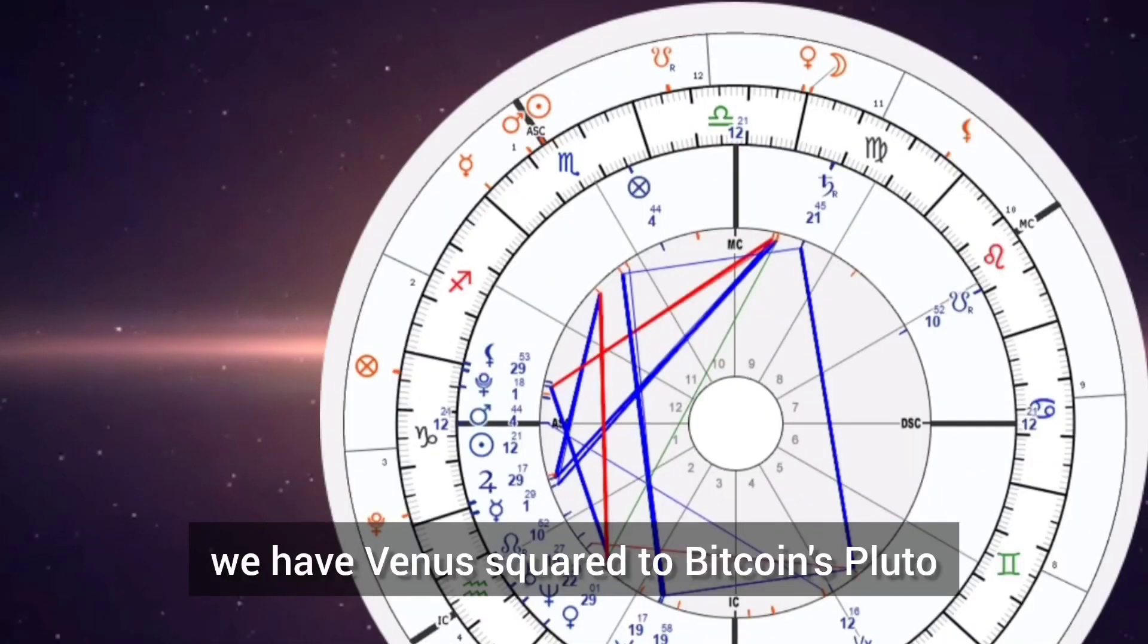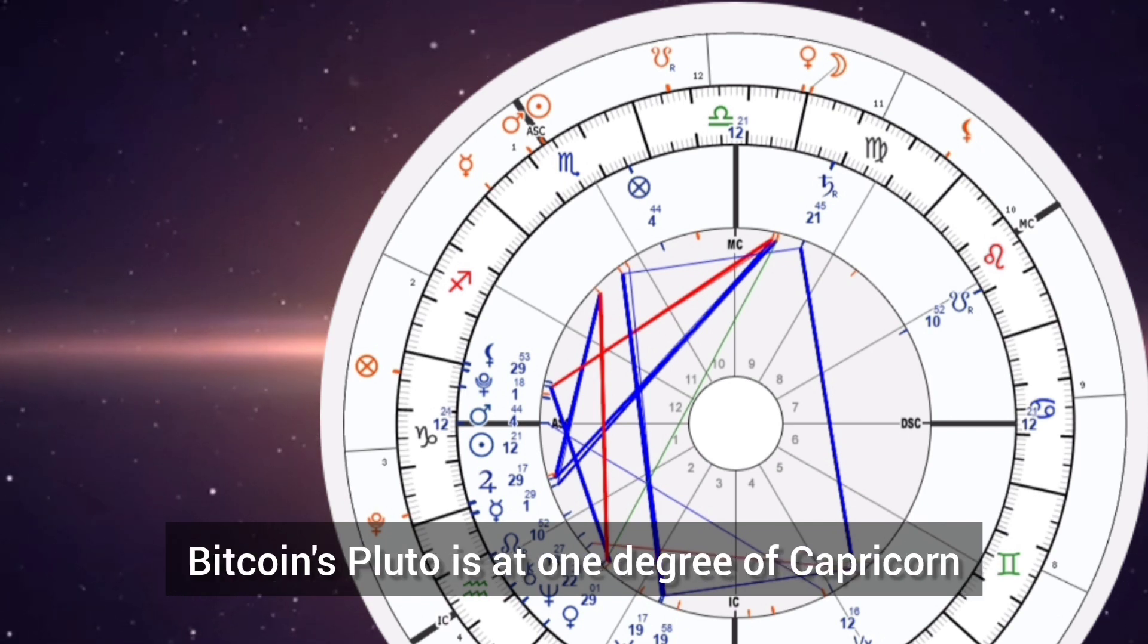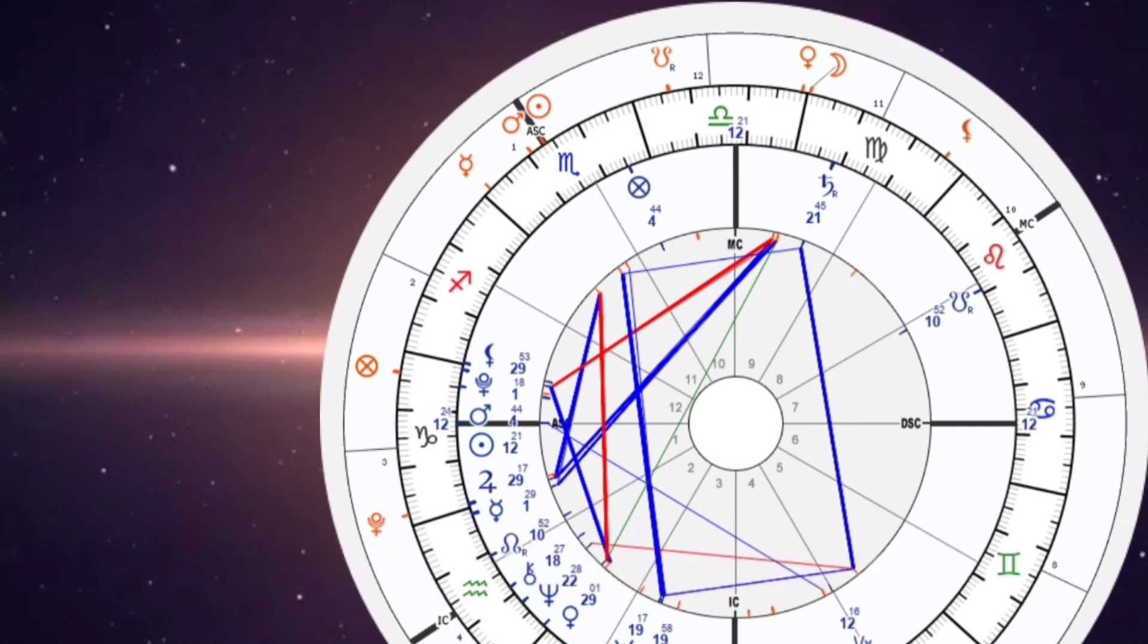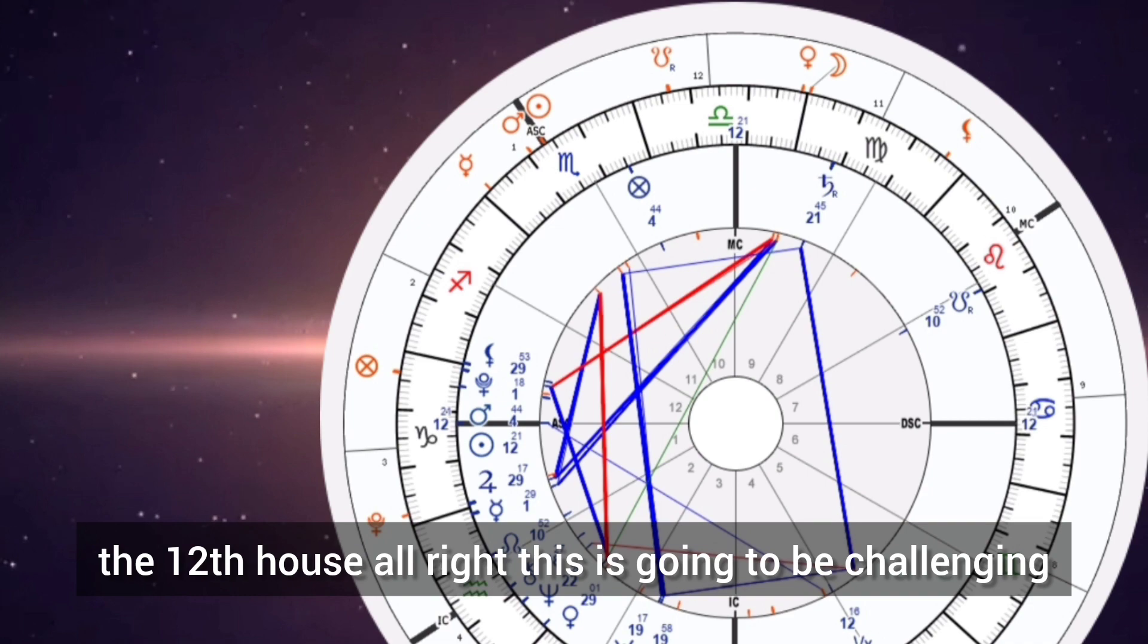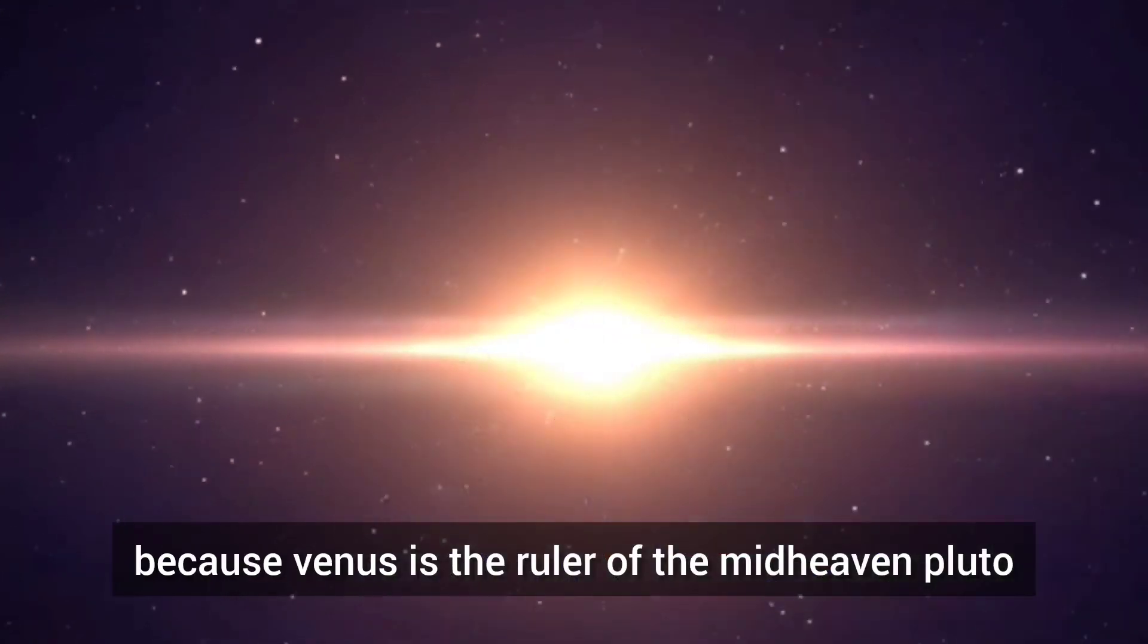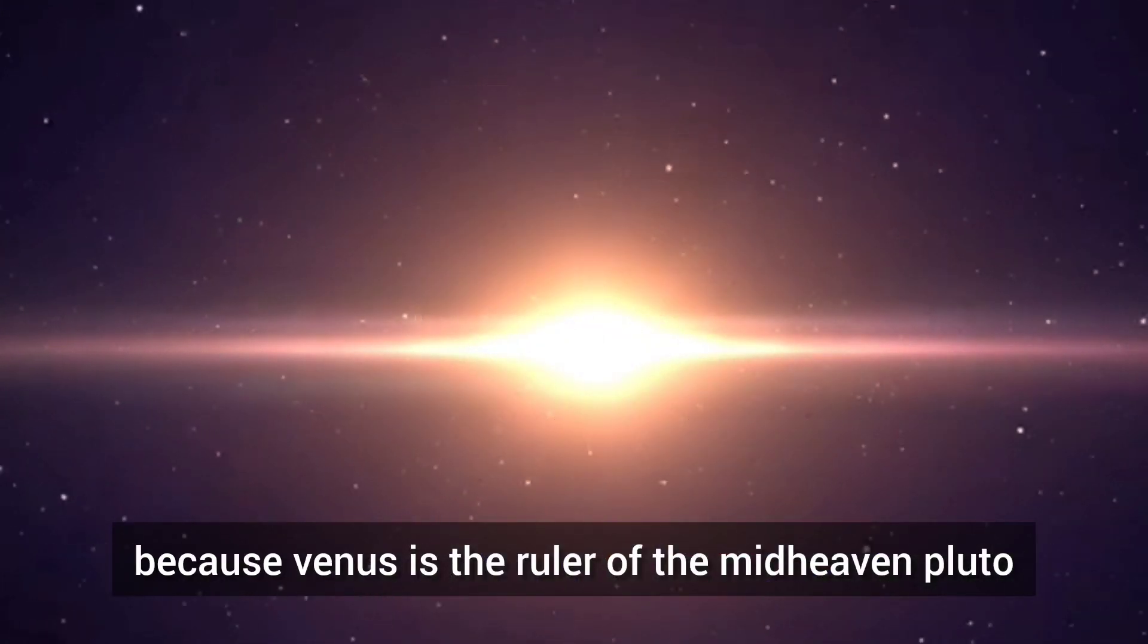We have Venus squared to Bitcoin's Pluto. Bitcoin's Pluto is at one degree of Capricorn, the 12th house. This is going to be challenging because Venus is the ruler of the midheaven.